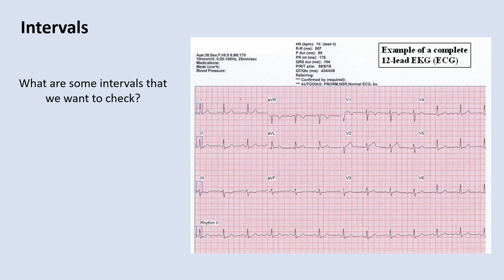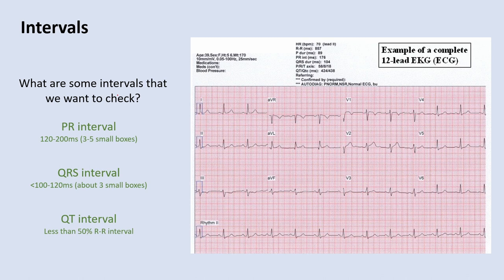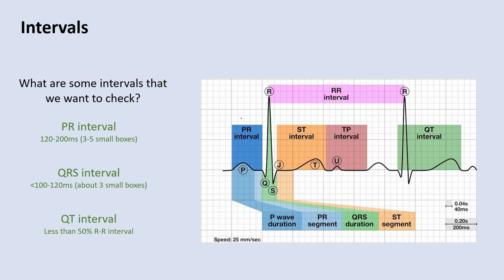The PR interval is normally between 120 and 200 milliseconds, or three to five small boxes. The QRS interval should be less than 120 milliseconds, or about three small boxes. The QT interval should be less than 50% of the R-to-R interval — that's a good way to eyeball if somebody has a prolonged QT. The R-to-R interval is from one R wave to the next, and 50% of that is where your QT interval should end. In this example, the QT interval is less than 50% of the R-to-R, indicating no prolonged QT.